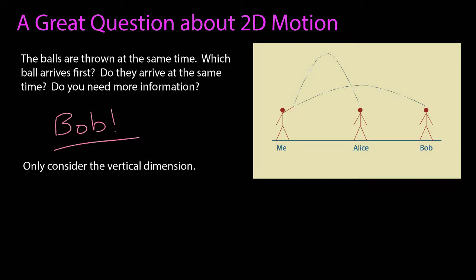What I really like about this question is that it goes to the heart of motion in two dimensions, that you have to keep the dimensions separate. Now I've said that before, but it's one thing to hear it, but it's another thing to have the correct intuition concerning that motion. To answer this question, you only consider the vertical dimension.